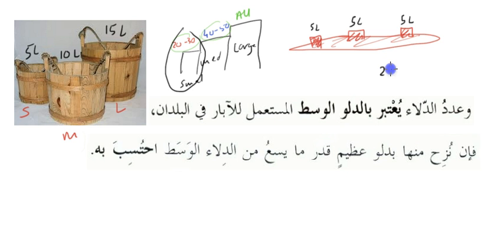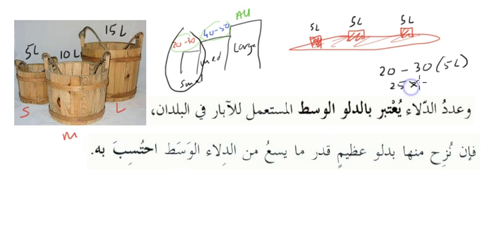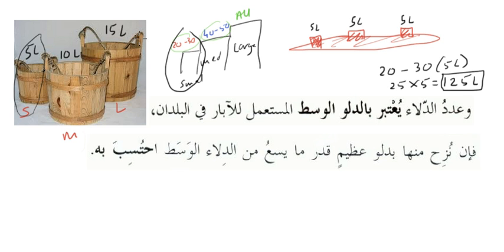With these calculations, how do we work out the number in an average city using five-litre buckets? If a small animal dies in a well, we take out twenty to thirty buckets. Let's say twenty-five buckets — twenty-five times five equals one hundred and twenty-five litres.